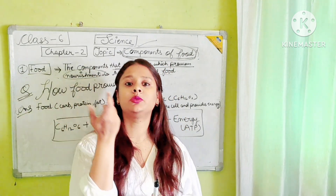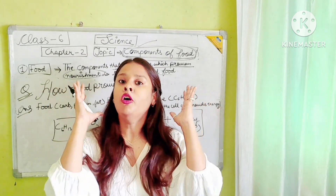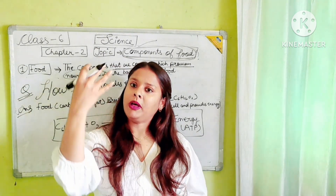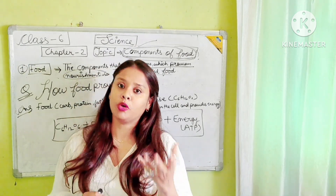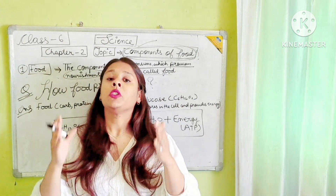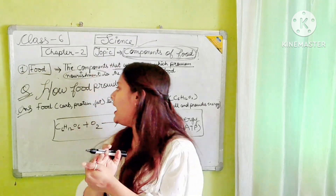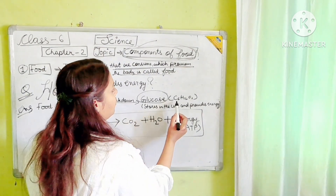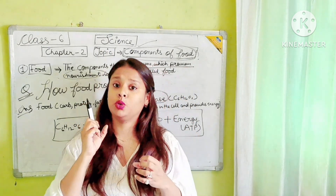Nutrients can be carbohydrates, proteins, fats, vitamins, minerals, and dietary fibers — all of these can be inside our food. When this food goes into our body, digestion begins. After that, the food breaks down into smaller, simpler chemical compounds. That compound is called glucose. Glucose has the chemical formula C6H12O6. This glucose is then stored in the cell.